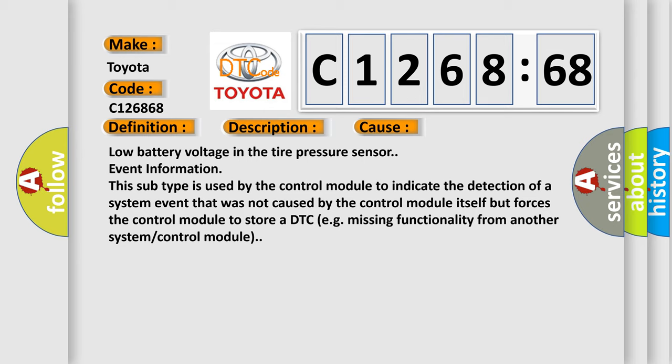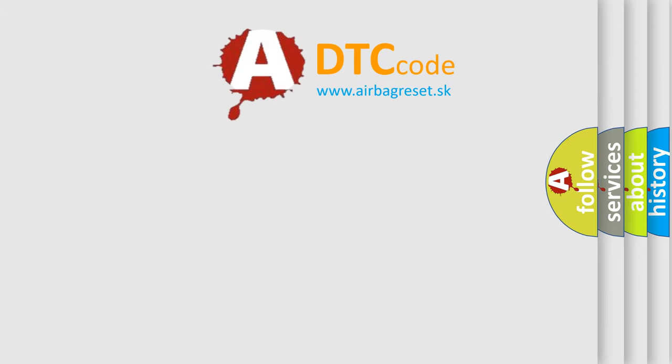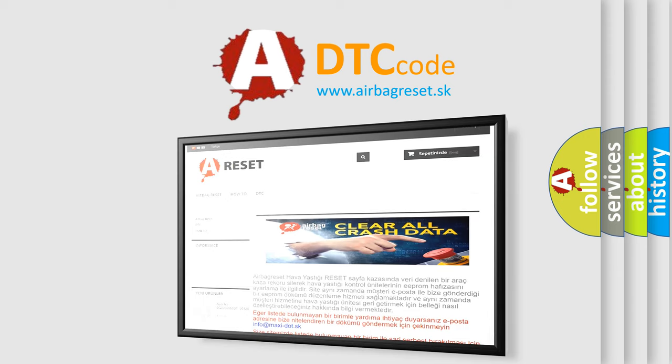This diagnostic error occurs most often in these cases: Low battery voltage in the tire pressure sensor event information. This subtype is used by the control module to indicate the detection of a system event that was not caused by the control module itself but forces the control module to store a DTC (e.g., missing functionality from another system or control module).